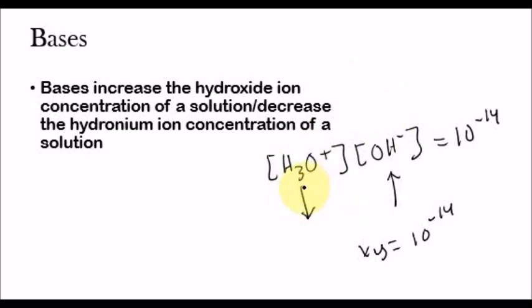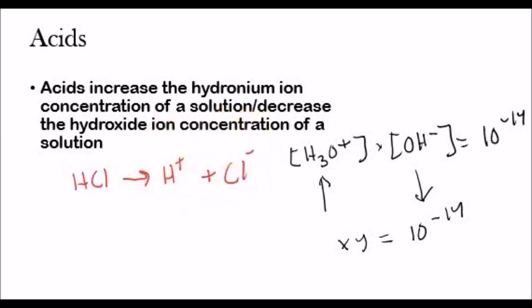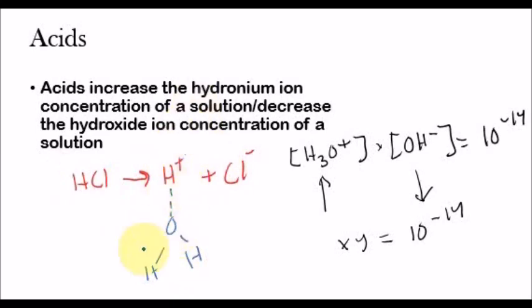Let me give you an example of an acid. If you had HCl — hydrochloric acid — and put it in water, it would dissociate to form H⁺ and Cl⁻. That H⁺ will then bond to a water molecule, and that will form hydronium. As more HCl is added to the water, more H⁺ is formed, which bonds to more water molecules and creates more hydronium, therefore increasing its concentration.